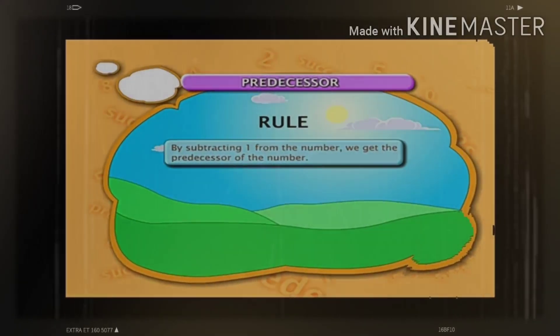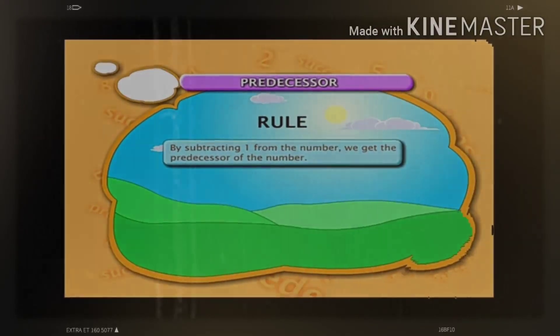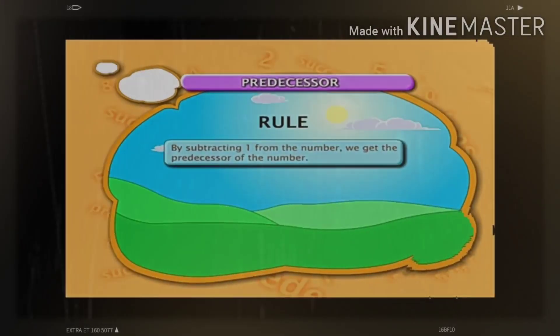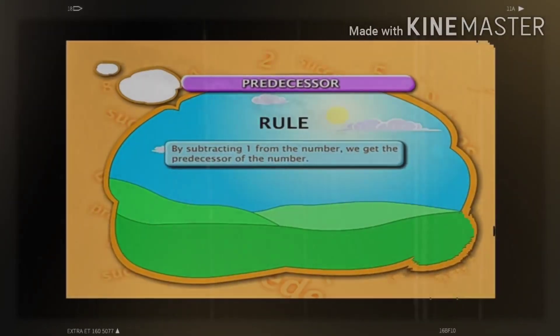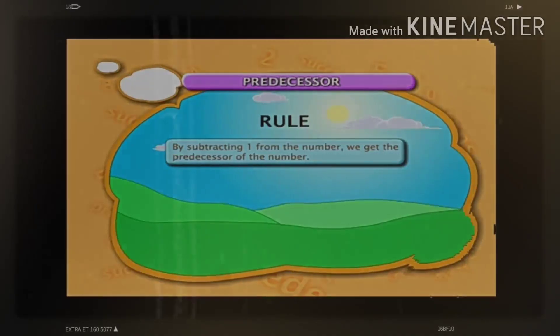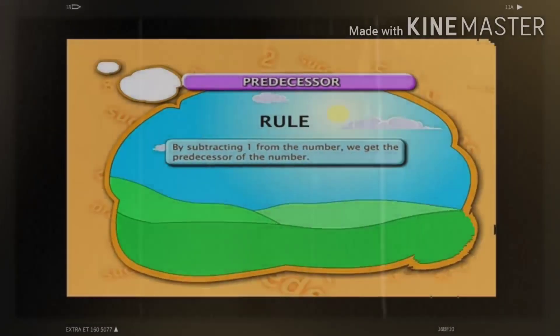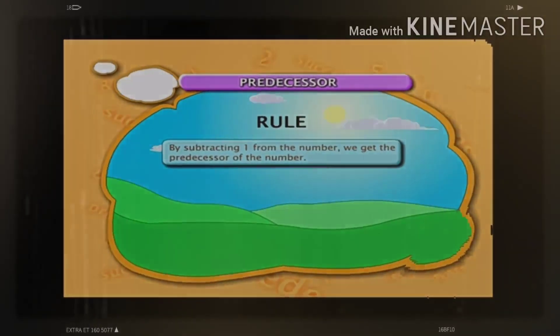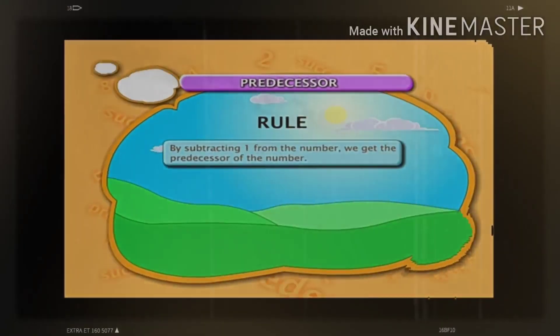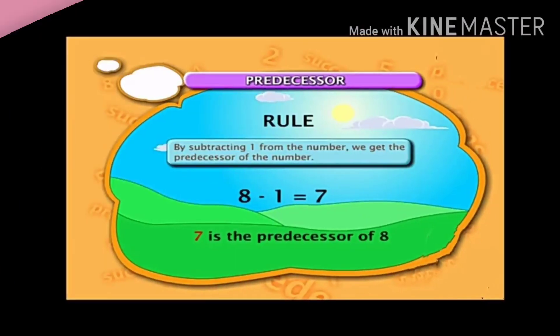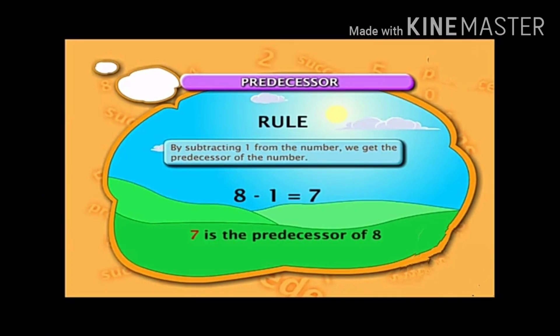Let us see the rule for predecessor. By subtracting one from the number, we get the predecessor of the number. It means when we find what comes just before, we have to subtract — minus one from that number. For example, eight minus one equals seven. Seven is the predecessor of eight.